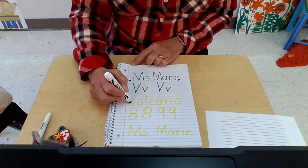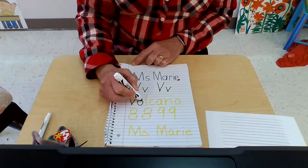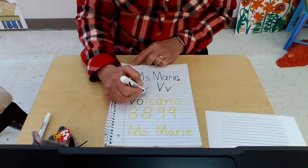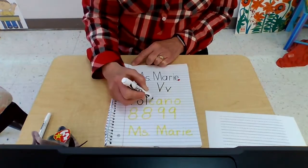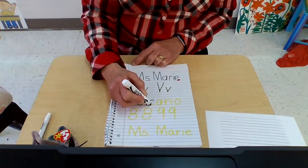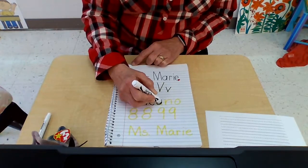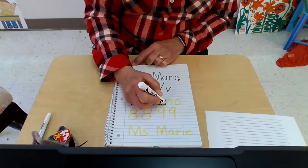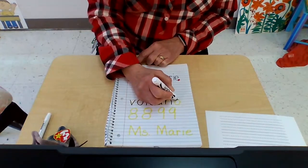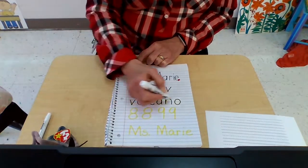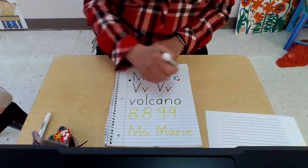We'll write V, O, L — now this is a lowercase l, but it starts all the way up to the sky and comes straight down. C, A, N, humpback, and an O. We can all make an O. Volcano. We go from left to right, green to red.